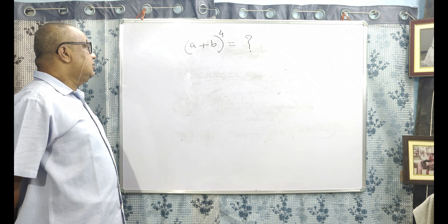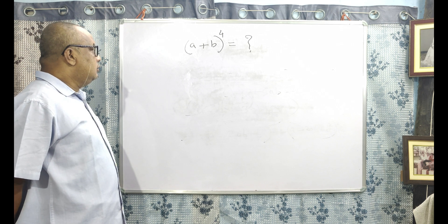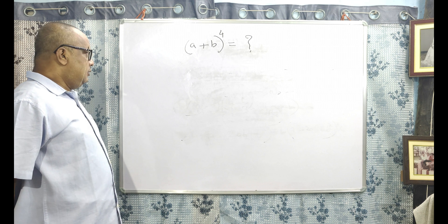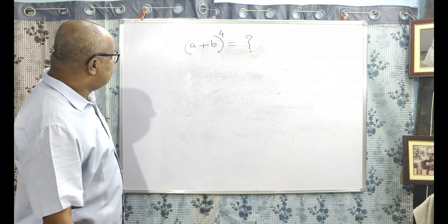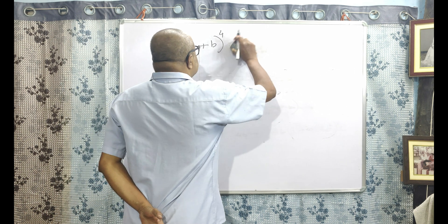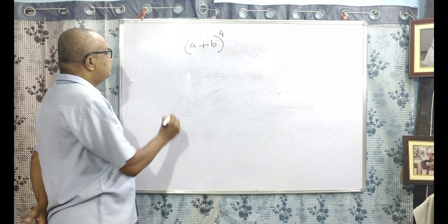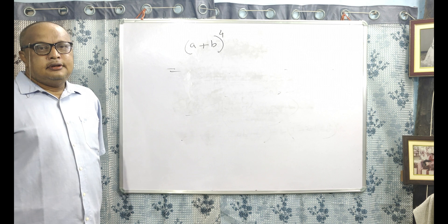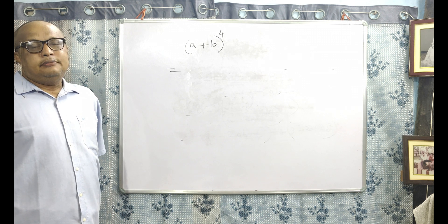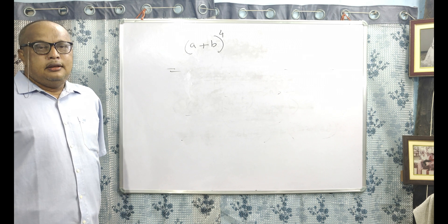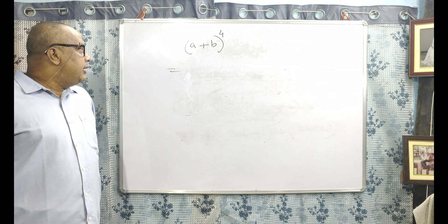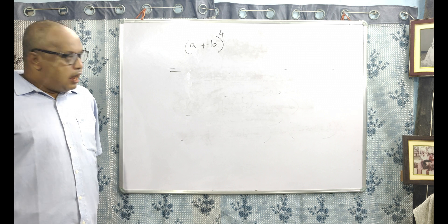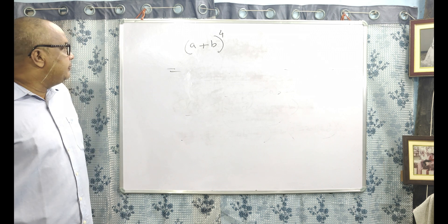So it has a very simple formula, which we can derive using the combination rule. Previously, I taught about permutation and combination, and I showed the combination rules. Now this combination rule can be applied here to expand A plus B to the power 4.